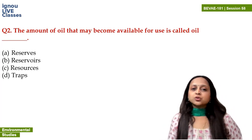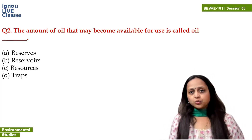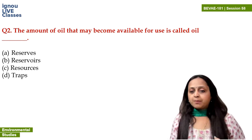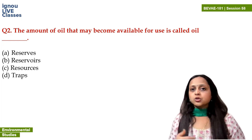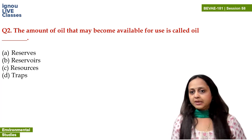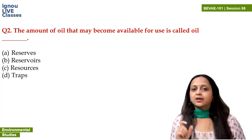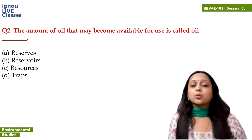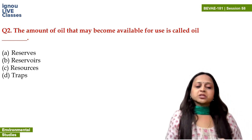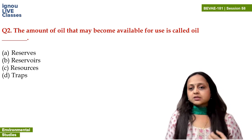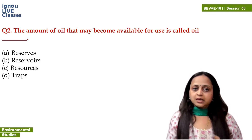Next question: the amount of oil that may become available for use is called oil blank. Options are: reserves, resources, reservoirs, and traps. This is a very tricky question because of the word 'may become available.' Resources are all the oil deposits you have, whether discovered or undiscovered.